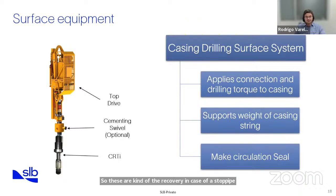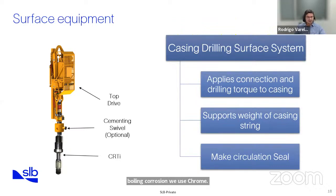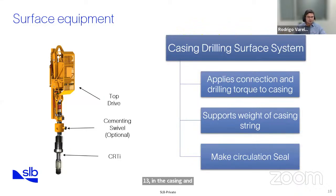On casing material: the casing is carbon steel most of the time. Sometimes to avoid corrosion — for wells with CO2 or H2S — 13-chrome casing is used to prevent casing failures.